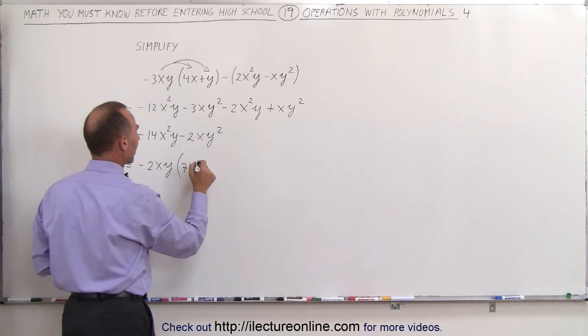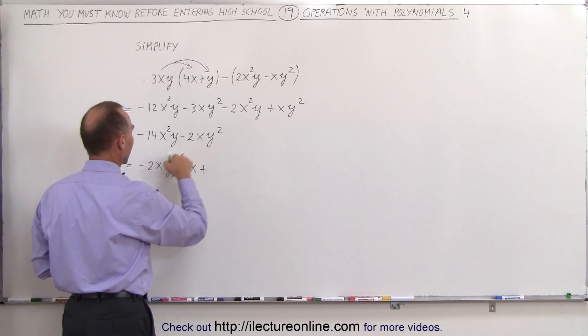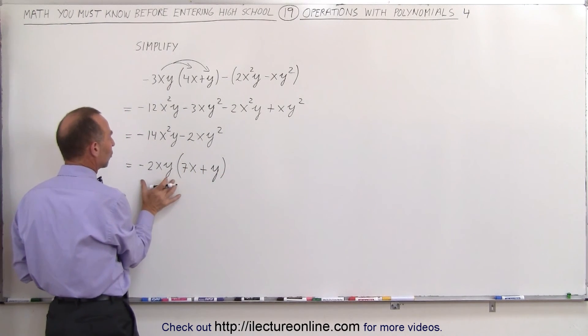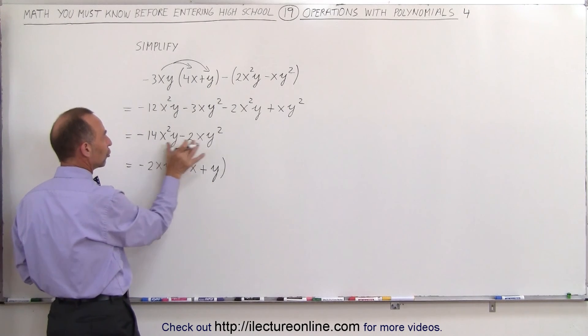And here the minus 2 is gone. So it becomes plus. The x is factored out. And one of the y's is factored out. So this leaves us with a minus 2xy, which is the common factor of these two terms. And this is what is remaining after we factor.